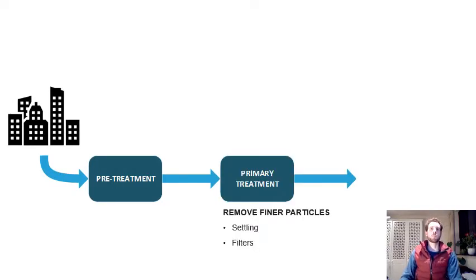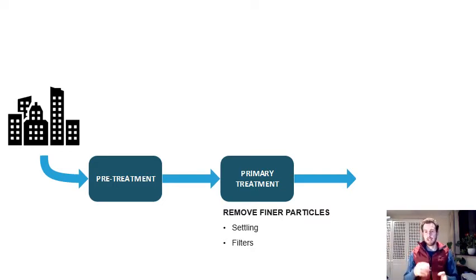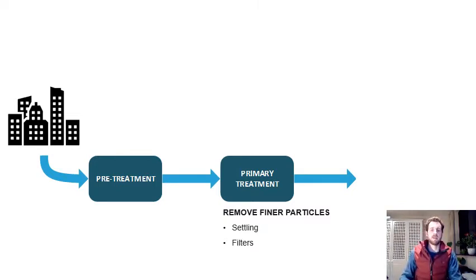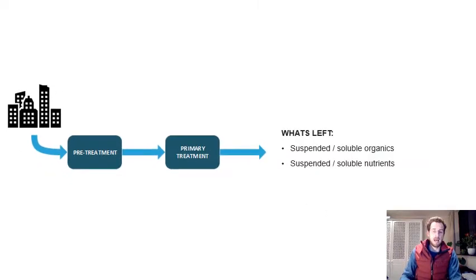Then we go to primary treatment, which is to settle the finer particles. In the sewer system, a lot of what goes down gets broken down to smaller pieces, but those pieces can still settle. If given a chance in a quiescent environment, those particles settle and become a settlable sludge which we can remove. Primary treatment typically takes out a lot of the organic carbon or energy in the water — it's a very effective step. But what's left is the things that don't settle: soluble organics and soluble nutrients.